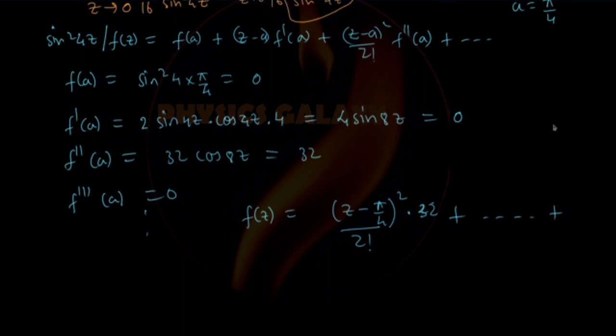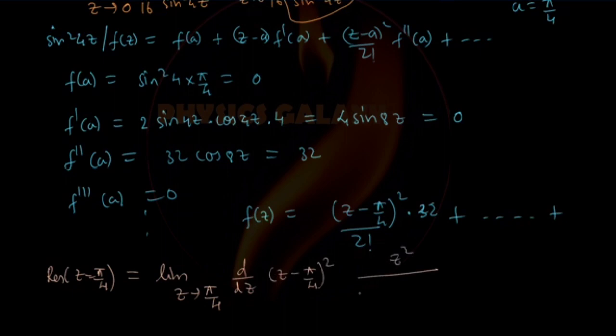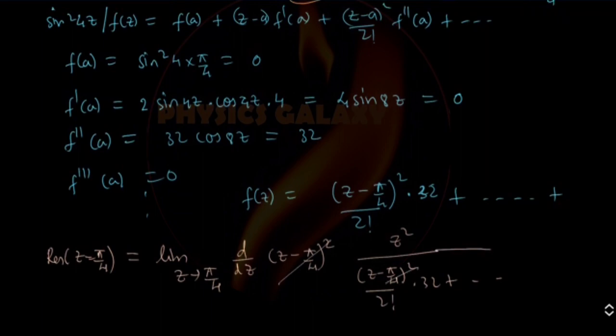Now we need to find the residue. Since it is a second order pole, we will find the limit this way: residue at z = π/4 equals limit as z tends to π/4 of d/dz[(z - π/4)² · z²/sin²(4z)]. Expanding the function, this becomes (z - π/4)² · z² divided by [(z - π/4)² · 32/2!] plus other terms. We can cancel these out, so 32 becomes 16.